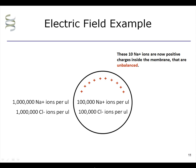The 10 sodium ions shown here are positive charges that will be unbalanced if they go through the membrane, without being accompanied by a chloride ion.